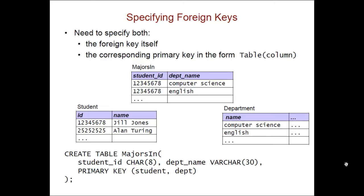When specifying a foreign key we need to specify the name of the foreign key itself and the name of the primary key to which it refers. So if you remember MajorsIn both of its columns are foreign keys. Student_id refers to the id column in Student and so we would specify that down here by saying FOREIGN KEY and then in parentheses the name of the foreign key column itself which is student_id and then the keyword REFERENCES and then we have the table name of the corresponding primary key and then the column name in parentheses of that primary key.